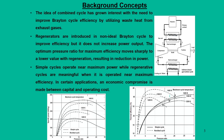In this lecture, we will provide a case study in which a gas turbine cycle is combined with a steam power cycle. The idea of combined cycle has shown interest with the need to improve the Brayton cycle efficiency by utilizing waste heat from the exhaust gas. We intentionally make the Brayton cycle non-ideal by introducing regenerators to improve cycle efficiency, but it does not increase power output, and the optimum pressure ratio for maximum efficiency improves sharply with low regeneration resulting in reduction of power.